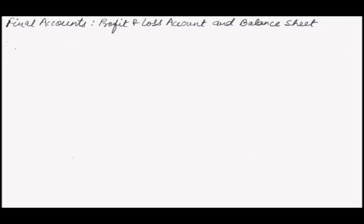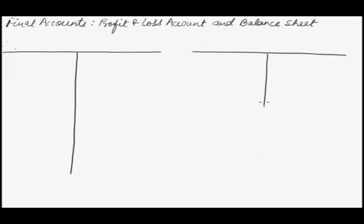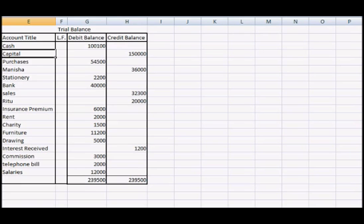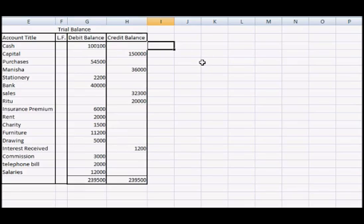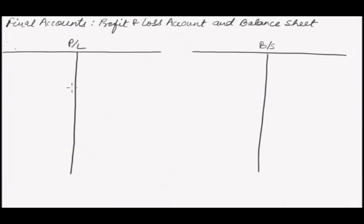The first step is to open both the profit and loss account and balance sheet simultaneously. Coming to the trial balance, you can see there are four types of accounts: assets, expenses, liabilities, and revenues. What we need to do is incorporate expenses and revenues in the profit and loss account, and assets and liabilities in the balance sheet.